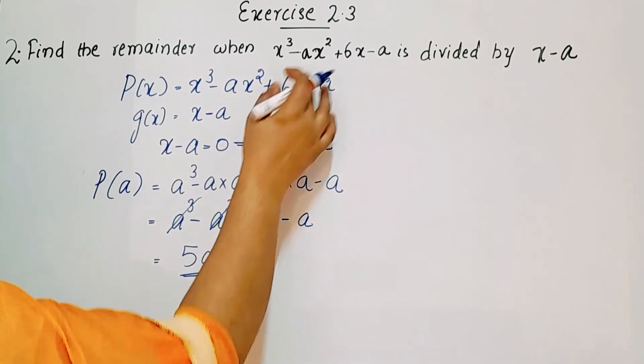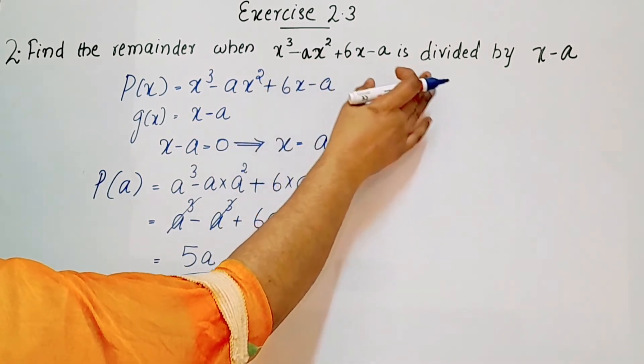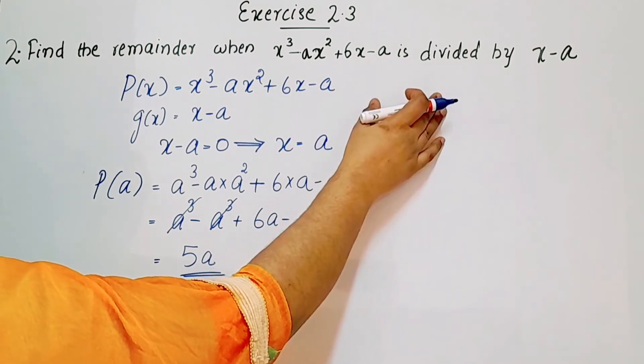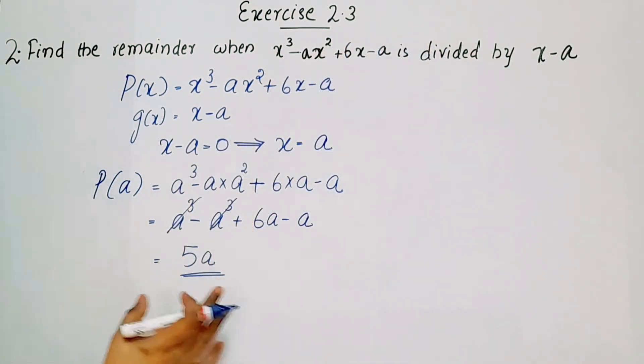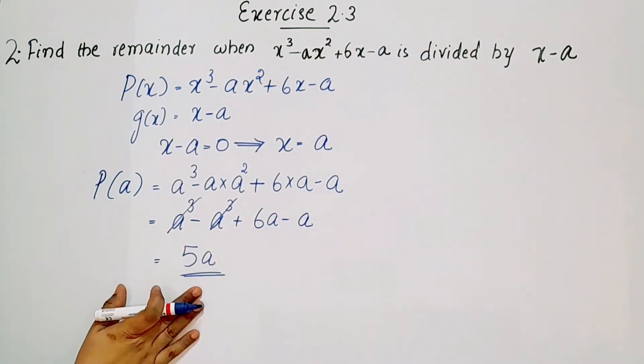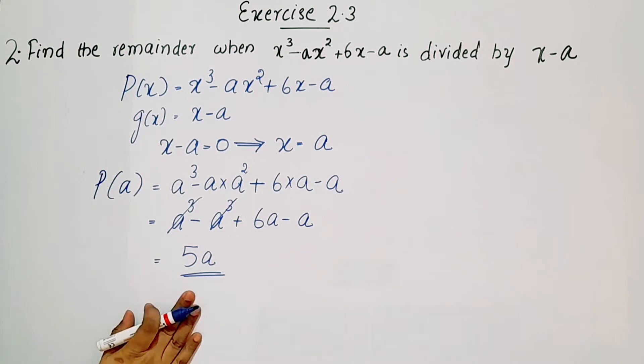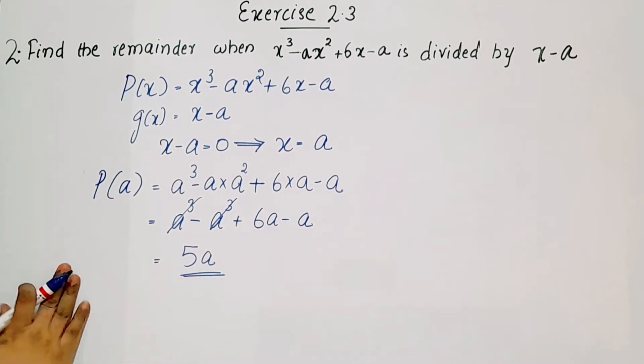So for the polynomial x³ minus ax² plus 6x minus a divided by x minus a, the remainder is 5a.